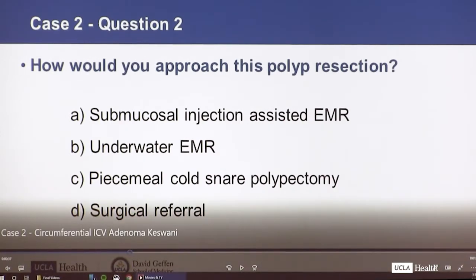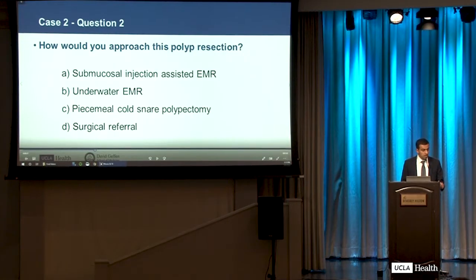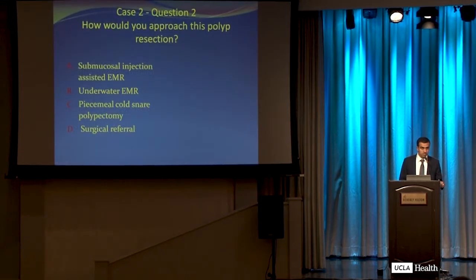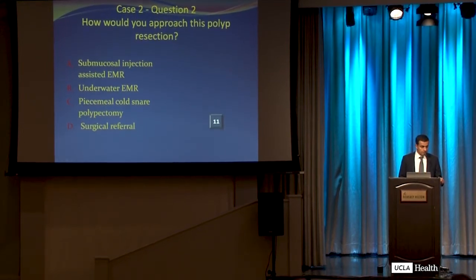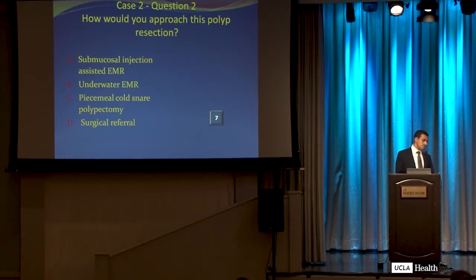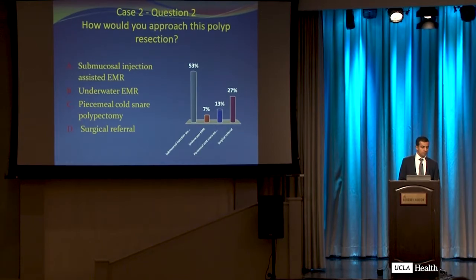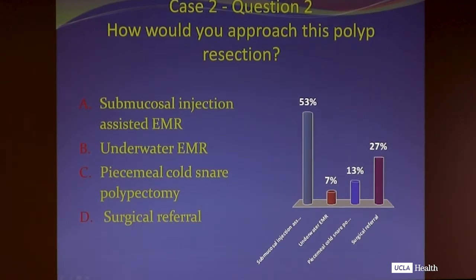For those that are going to attempt resection, how would you approach this polyp resection? Would you try a standard submucosal injection-assisted EMR, underwater EMR, piecemeal cold snare right at the IC valve, or would you refer this to surgery given its location and the challenges about recurrence? More than half of the audience would go with standard submucosal injection followed by EMR. The minority chose underwater EMR, a handful would go for snare polypectomy, and over a quarter would send this to surgery.